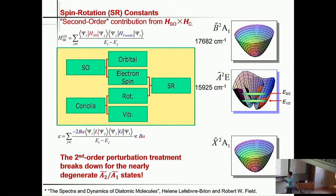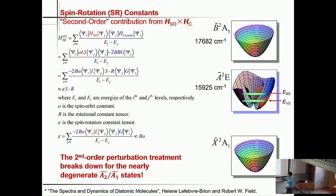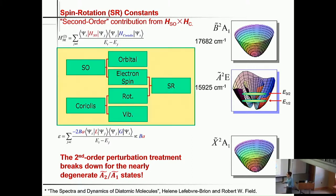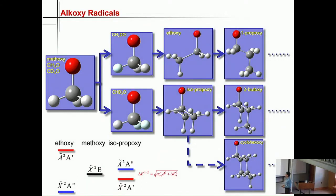These equations are derived using second-order perturbation theory, but the second-order perturbation treatment will break down if the A1 and A2 states are close to each other — quasi-degenerate — and the separation is dominated by spin-orbit interaction. Unfortunately, at this moment we still do not have rotationally resolved spectra of calcium ethoxide or isopropoxide.